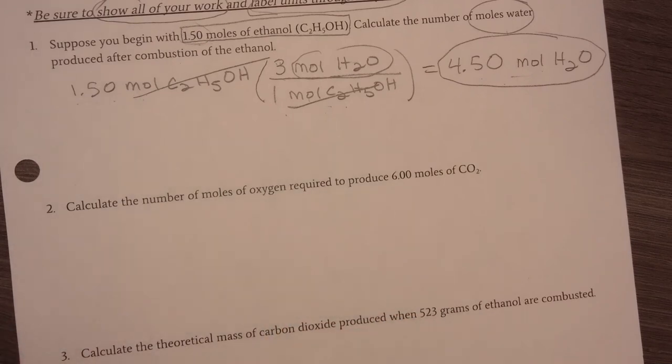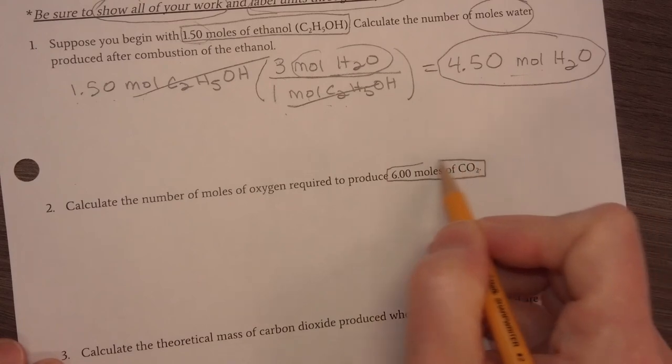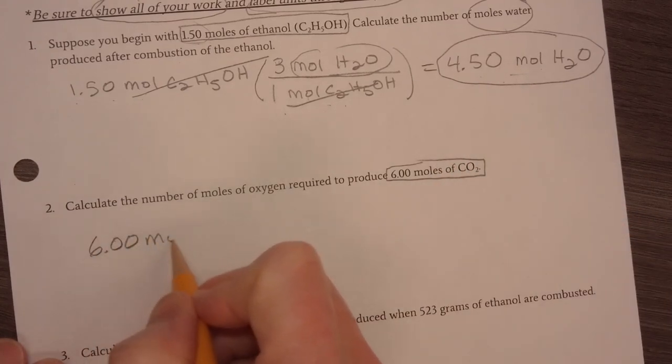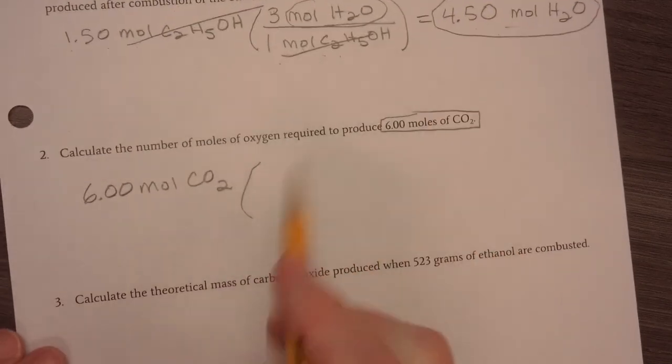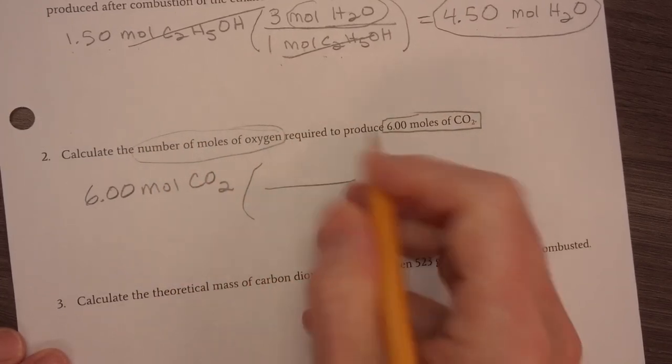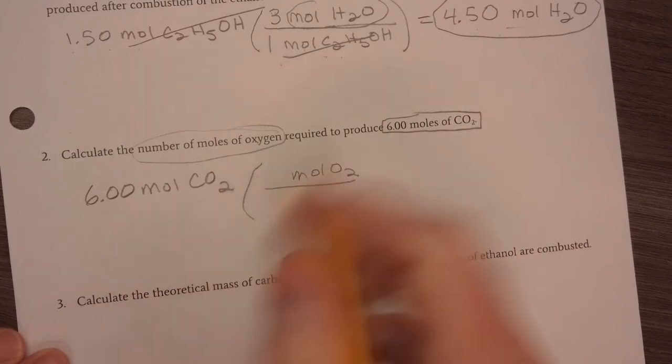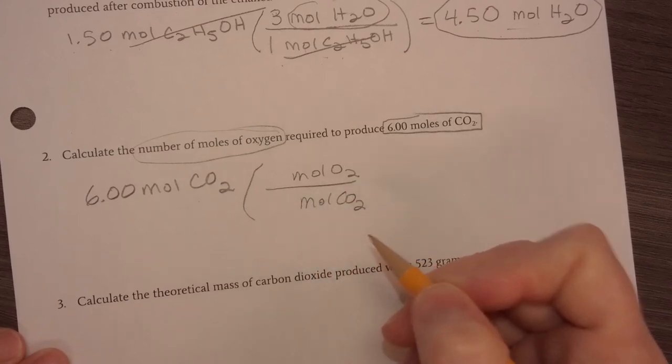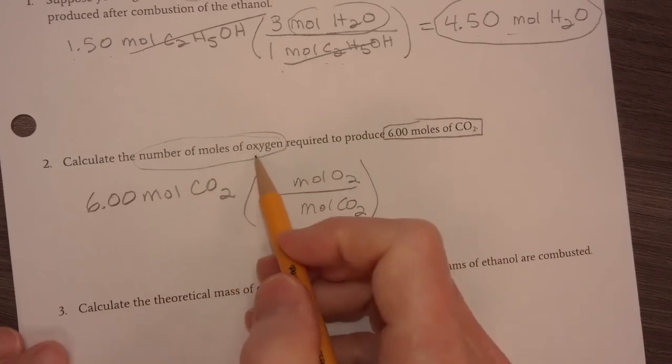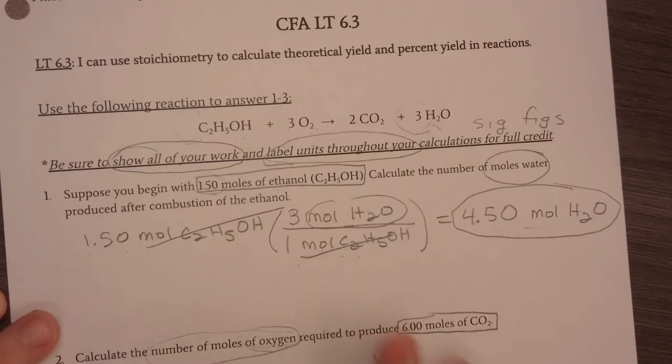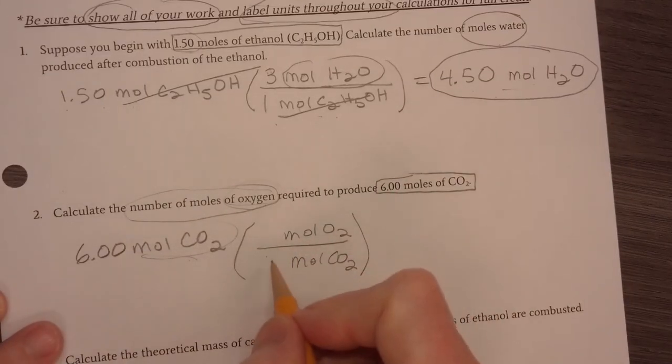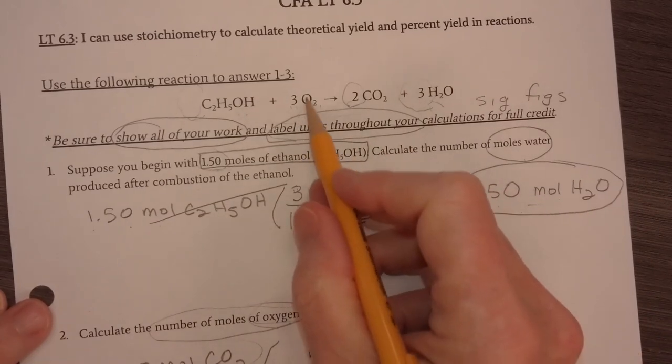The next one says calculate the number of moles of oxygen required to produce 6.0 moles of carbon dioxide. So 6.00 moles of carbon dioxide is my given. Now, again, step one, have a balanced chemical equation. Step two, convert your given to moles. It's already in moles. Step three is use your mole ratio to find what you need. I want to know moles of oxygen. So my mole ratio is going to be moles of oxygen, which is what I want, divided by moles of CO2. By the way, on the final exam or the summative, there might be times where it asks for moles of oxygen or something with oxygen. Remember, oxygen is always O2. So my moles of CO2 in my balanced chemical equation, there's a 2. In my balanced chemical equation for oxygen, there's a 3.